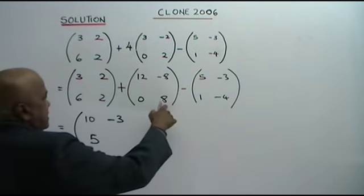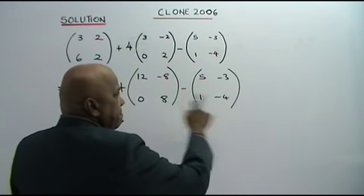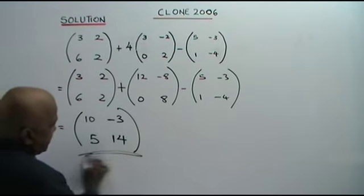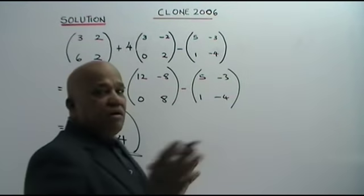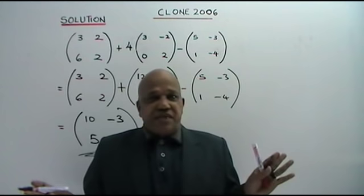2 plus 8 is 10. And the final calculations complete the matrix.